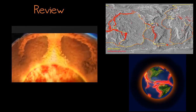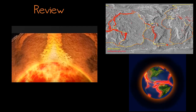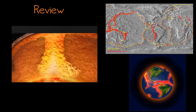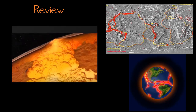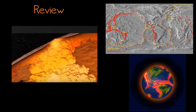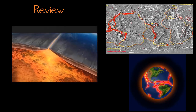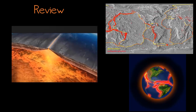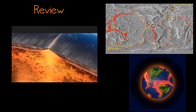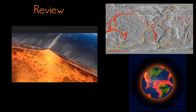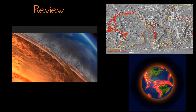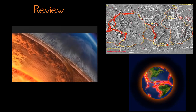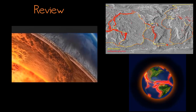The edges are called plate boundaries, and there are three main types. We already talked about convergent boundaries in the last video, and in this video we'll look at the other two: divergent boundaries and transform boundaries.